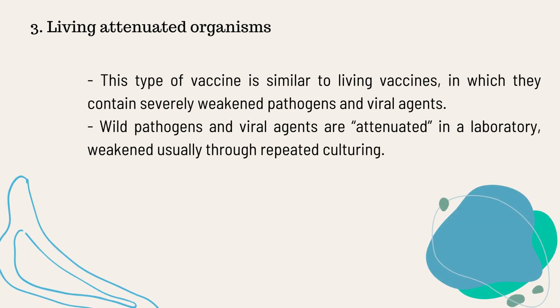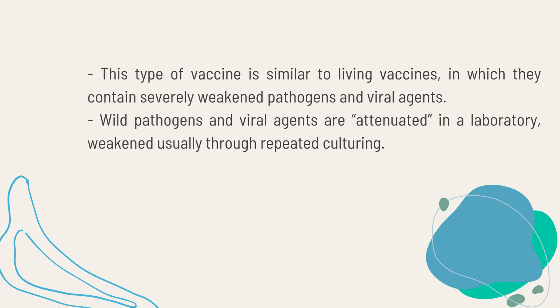The third type of vaccine is the living attenuated vaccine, or organisms. It is similar to the living vaccines in that it contains a still-living pathogen, such as viral agents, but these wild pathogens or viral agents are weakened. This is usually done by attenuation in a laboratory through repeated culturing.